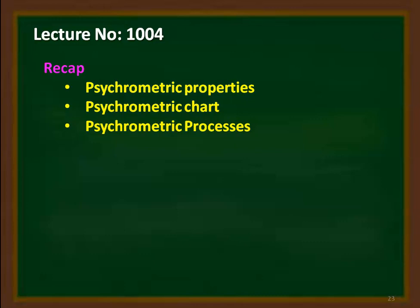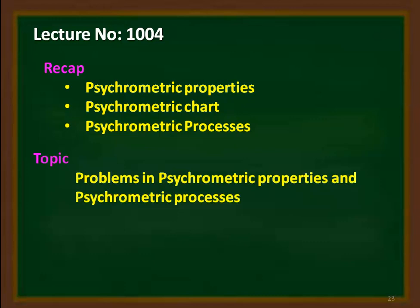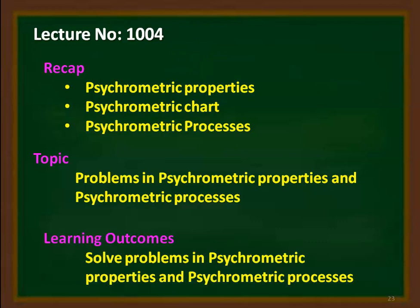Using the psychrometric chart, we can read the psychrometric properties. We studied about the psychrometric processes like sensible heating, sensible cooling, cooling dehumidification, heating humidification, chemical dehumidification and adiabatic mixing of two air streams. In this lecture, we solve problems in the psychrometric properties and psychrometric processes. The learning outcome: at the end of the lecture, the student will be able to solve problems on psychrometric properties and psychrometric processes.